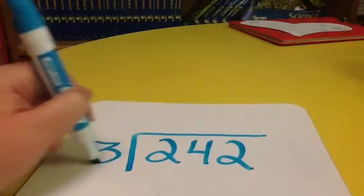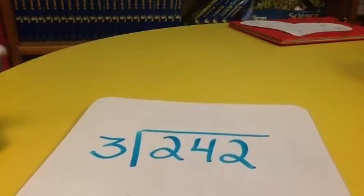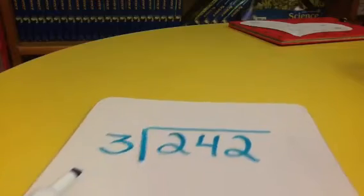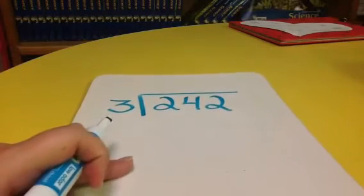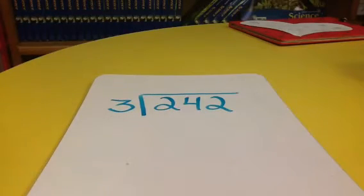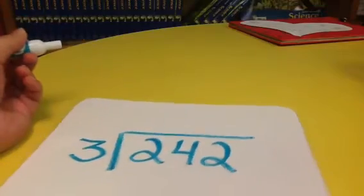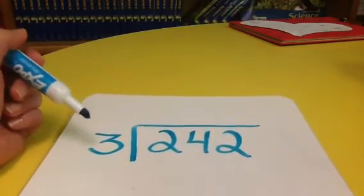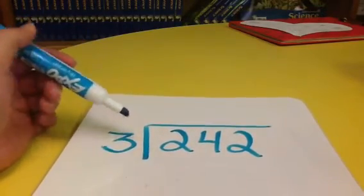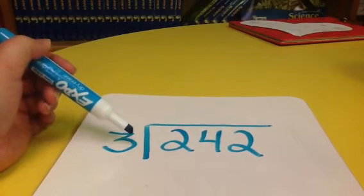Now the students received a cheeseburger, a picture of a cheeseburger that lists all the steps for long division if we were to do it in the standard algorithm, which is what this is. So our first step would be to divide.